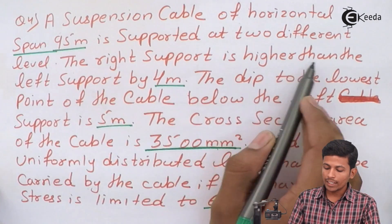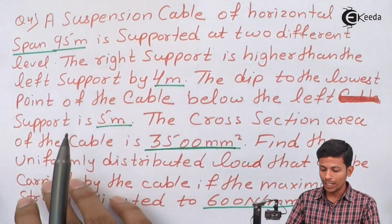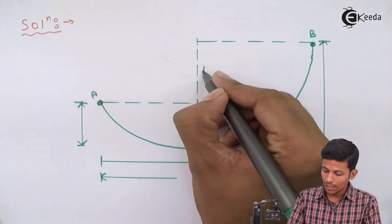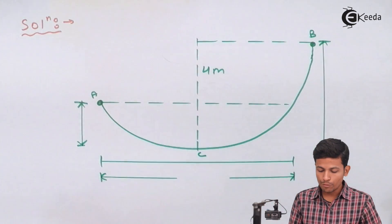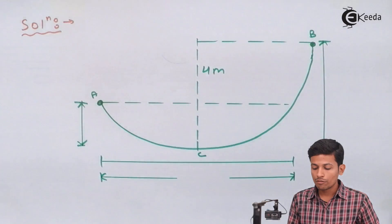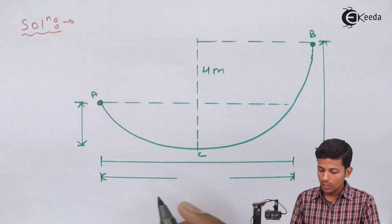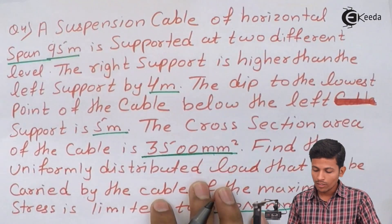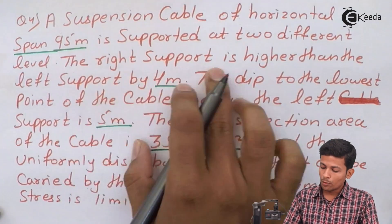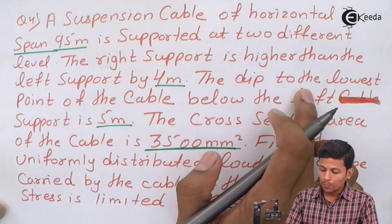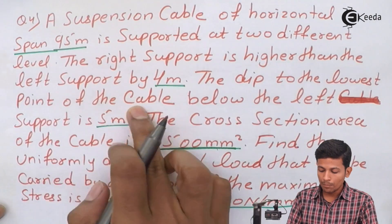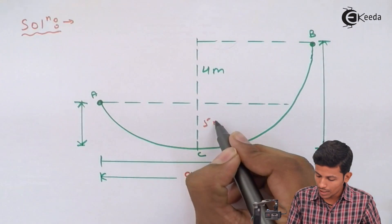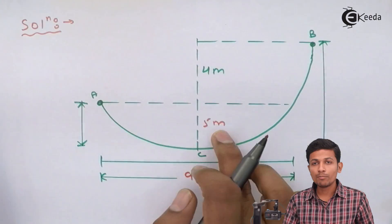The right support is higher than the left support by 4 meters, so the vertical distance between the two supports is 4 meters, and the span is 95 meters. The depth to the lowest point of the cable below the left support is 5 meters.